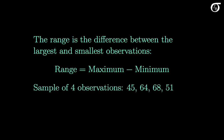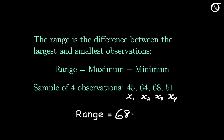Consider this sample of 4 observations: x1, x2, x3, and x4. The range is the maximum value, 68, minus the minimum value, 45, which works out to 23. The range is pretty easy to calculate and interpret, but it's not a great measure of variability. The range doesn't tell us anything about the spread of the values between the maximum and the minimum.